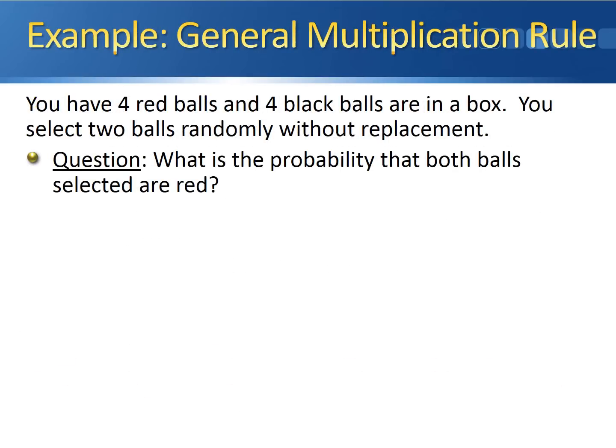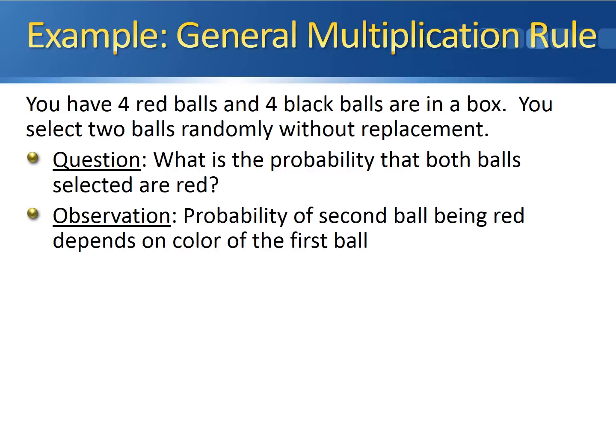For example, let's say we have four red balls and four black balls in a box. We select two of them without replacement, and we want to know the probability that both balls selected are red. The probability of the second ball being red depends on the color of the first ball. Since you're not putting the first ball back, you don't know how many red balls and how many black balls are still going to be in the box when you go to take that second one out.